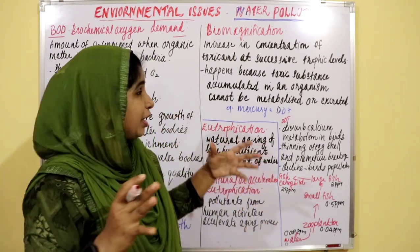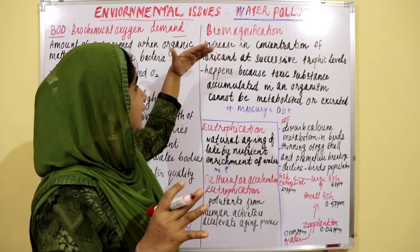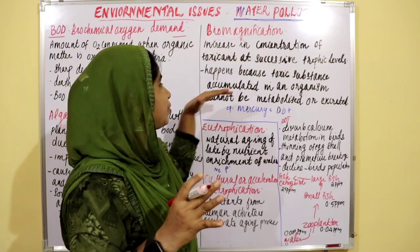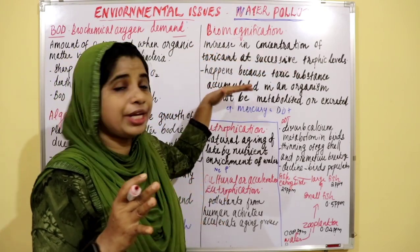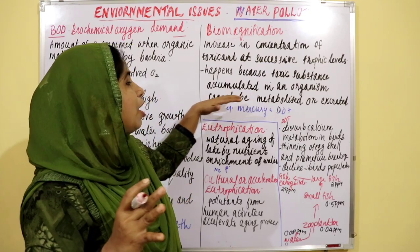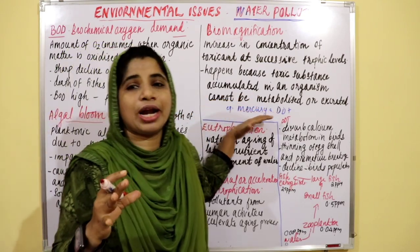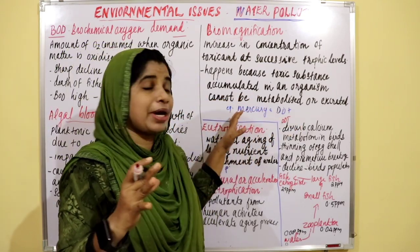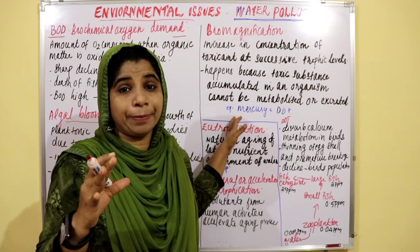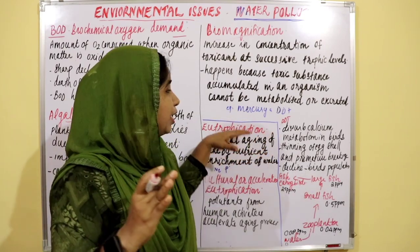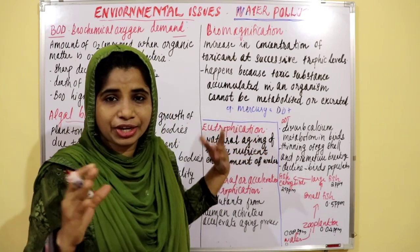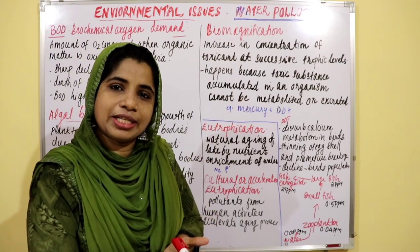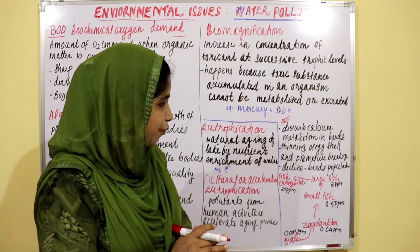This is biomagnification. The toxic substance accumulated in an organism cannot be metabolized or excreted. An example is mercury. Another example is DDT.